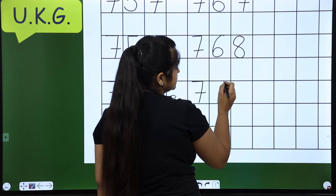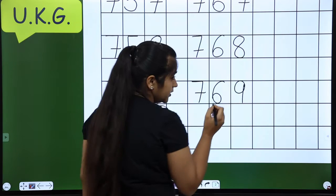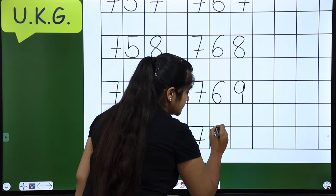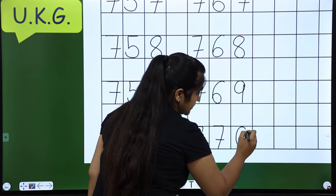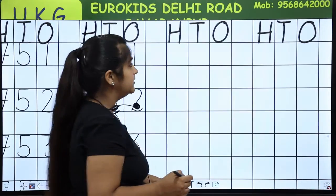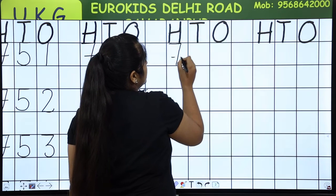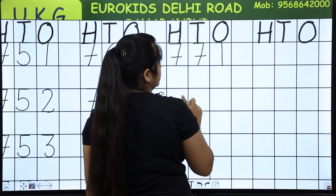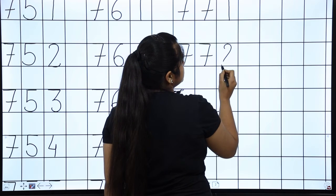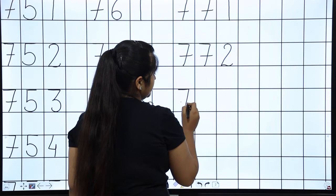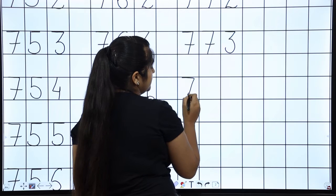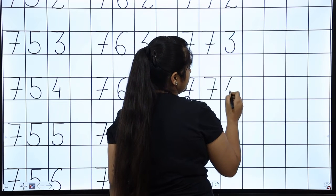Now, what comes? 7 as it is. And after 69, what comes? 770. Done. Now, we are going to start a third line from 771, 772, 773, 774, 775.